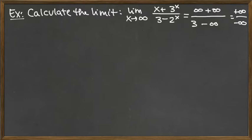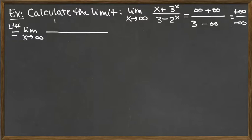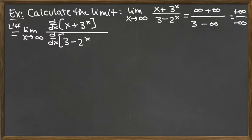And so this indeterminate form is positive infinity over negative infinity, which is one that's appropriate for L'Hopital's rule. So we've got the limit as X goes to infinity. When we're applying L'Hopital's rule, we've got the ratio of the derivatives. With practice this step could probably be eliminated, but it's good to remind yourself what it is you're doing at each step, so I go ahead and write it out.